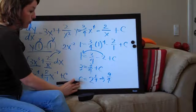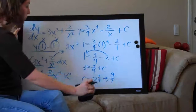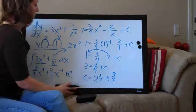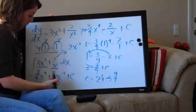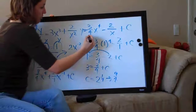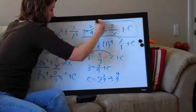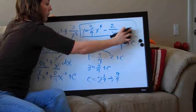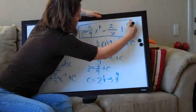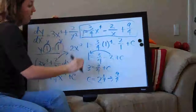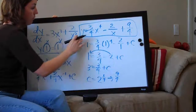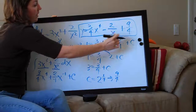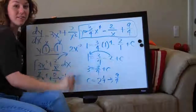We've solved for C — C equals 9 fourths. The last thing to do is plug that back into our simplified equation. So instead of plus C, we write plus 9 fourths. Once we've done that, that's the final step. Our answer is y equals 3 fourths x to the fourth minus 2 over x plus 9 fourths. This is the form in which you'll want to provide your answer. See you next time.